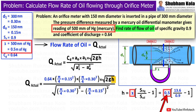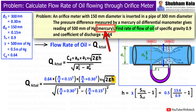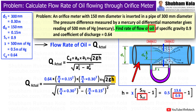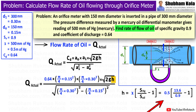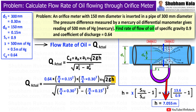Here, x is 0.5 meters of mercury. The heavier fluid is mercury and we know its specific gravity is 13.6. The lighter fluid is oil, whose specific gravity is given as 0.9. Putting these values in, by calculating this, we get small h equal to 7.05 meters of oil.